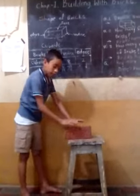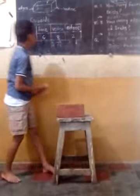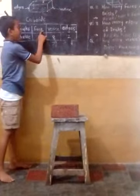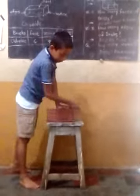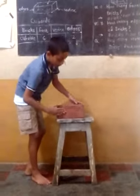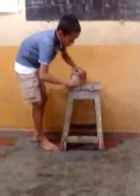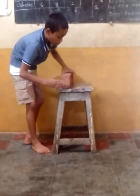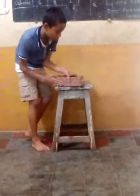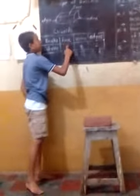So we count on this brick. First one is face. This plane is called a face. We count: one, two, three, four, five, six. Brick have six faces.